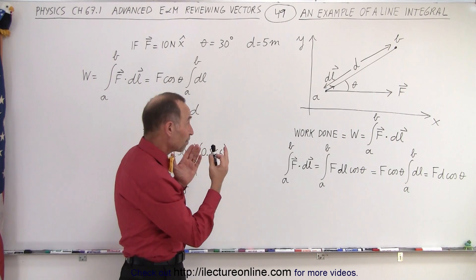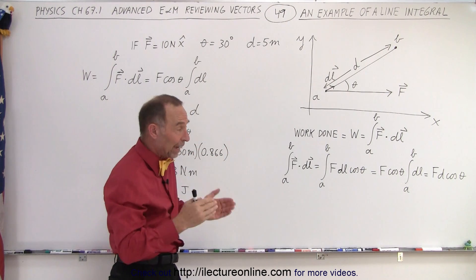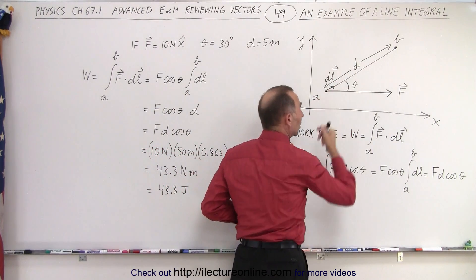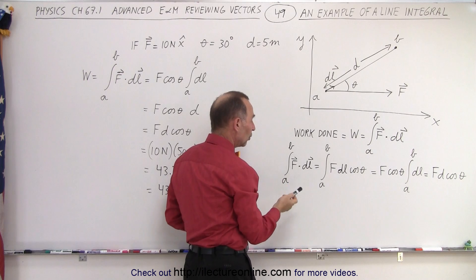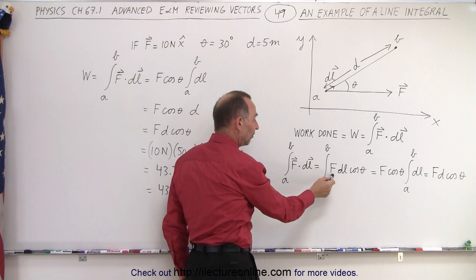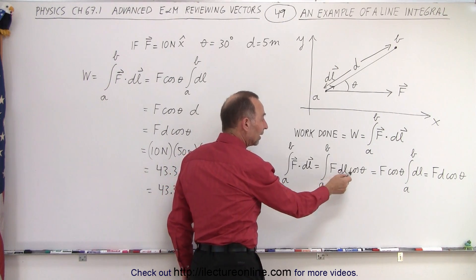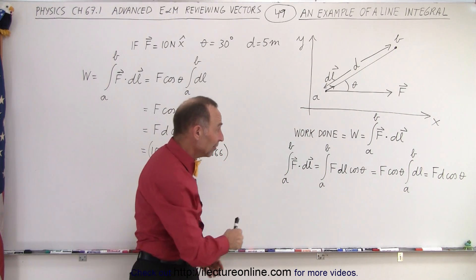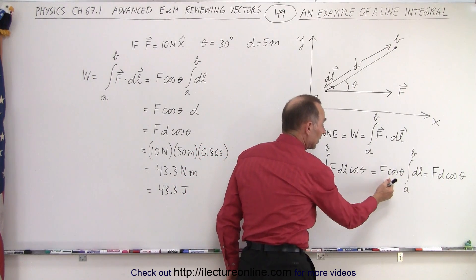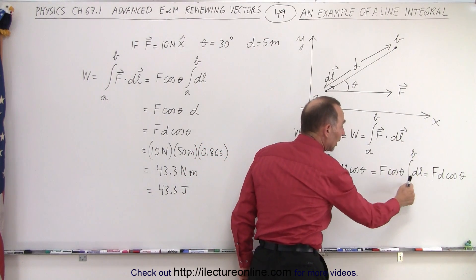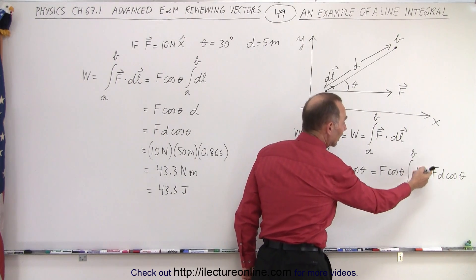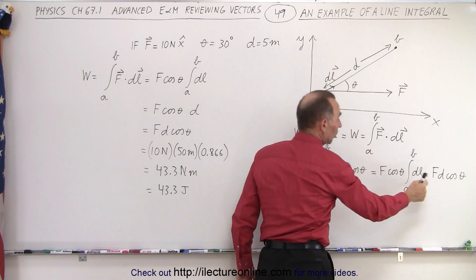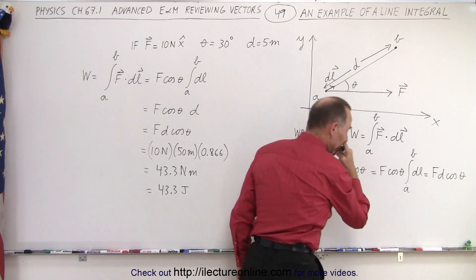If we have an example where the force is constant in magnitude and direction, and the direction of travel or displacement is also constant, then F dot dL simply becomes the magnitude of F times the magnitude of dL times the cosine of the angle between the two — that's what the dot product gives you. If F and the angle are constant, they come out of the integral sign, and we simply integrate over the path traveled. For a straight line, the integral from A to B of dL is simply the distance traveled, so it becomes F times D times cosine of theta.